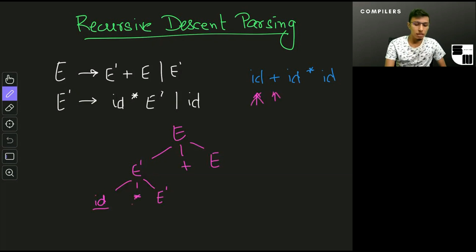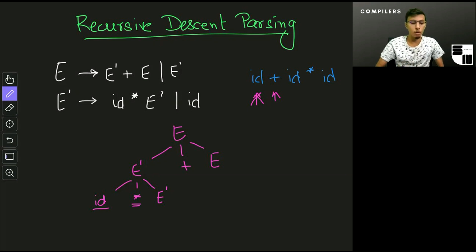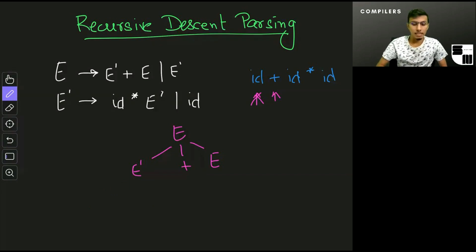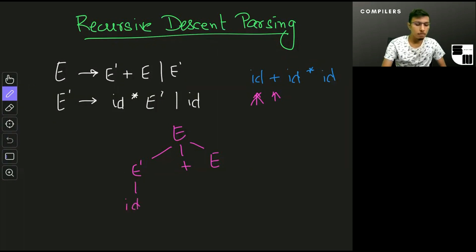I check my next symbol — in the tree I have an asterisk, but in my input I have a plus symbol, which means I need to backtrack. So I get rid of the last production, which was E' → id times E', and instead use the next production for E', which is E' → id.